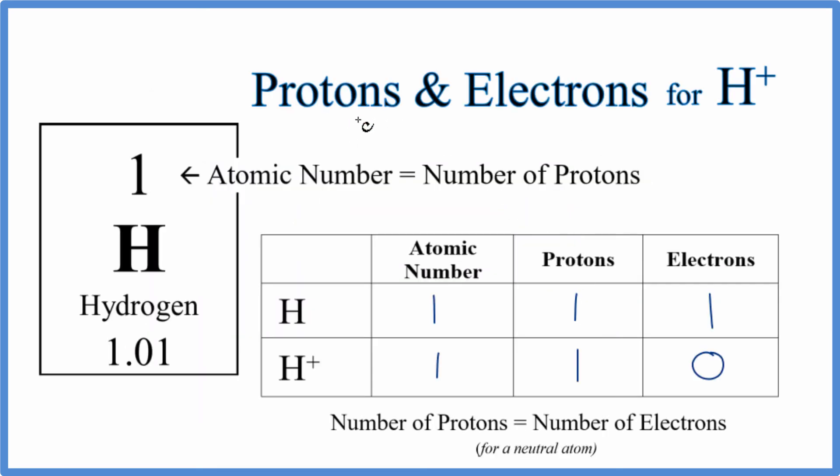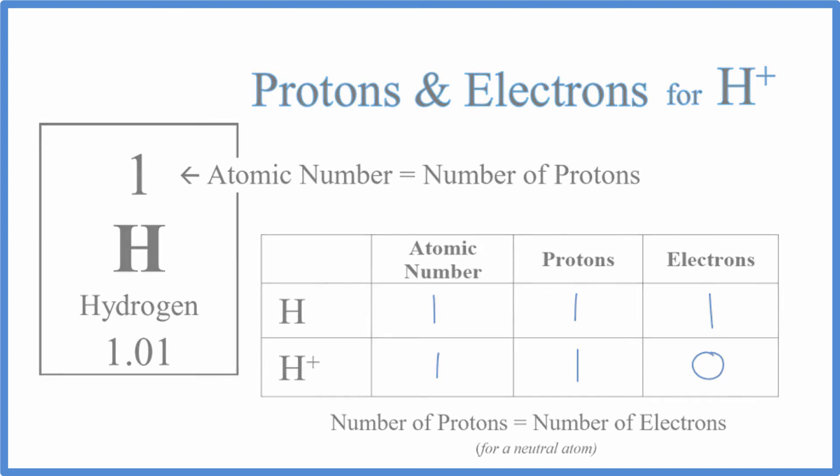So that's how you find the protons and electrons for hydrogen. If you're interested in finding the neutrons for the different isotopes of hydrogen, there's a link in the description for a video on how to do that. All right. This is Dr. B. Thanks for watching.